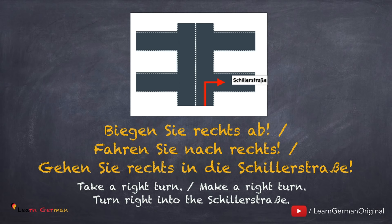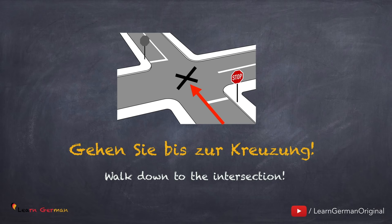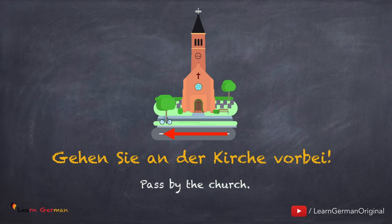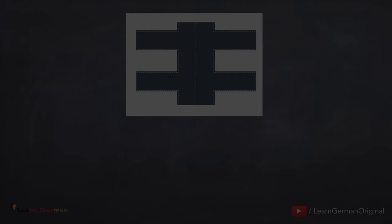If you want to revise Imperativ, you can watch our video on the same — the link is given below. Now let's move on to the next one: 'Gehen Sie bis zur Kreuzung.' When you have to pass by something you would say: 'Gehen Sie an der Kirche vorbei.' Do remember: if the article of the place is 'die', you would say 'an der', for example 'an der Kirche.'